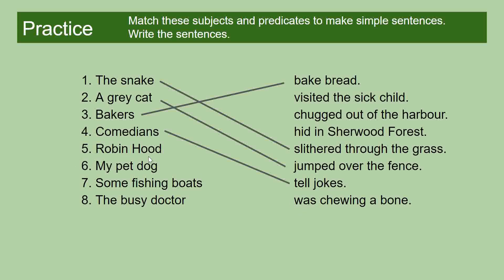Robin Hood hid in Sherwood Forest. Some of you might not know this, but Sherwood Forest is where Robin Hood came from — that's where he lived in the stories of Robin Hood. The verb is 'hid.' Sherwood Forest is a proper noun because it's the name of a place, and that's why it has capital letters.